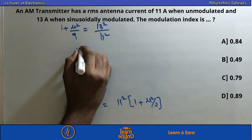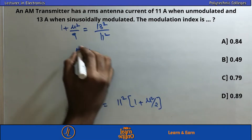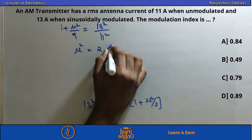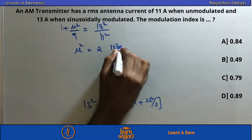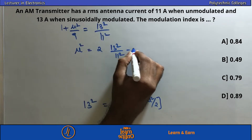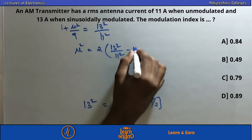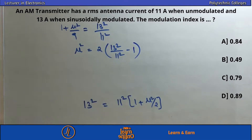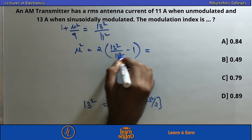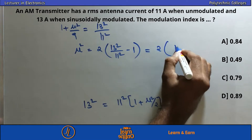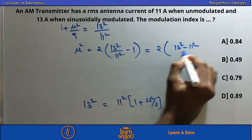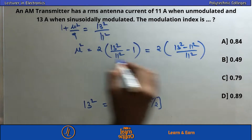Therefore μ² = 2 × (13² − 11²) / 11². Calculating: 13² = 169, 11² = 121, so 169 − 121 = 48. Thus μ² = 2 × 48 / 121.